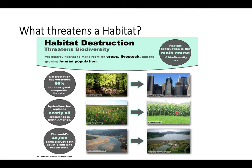Agriculture has replaced nearly all grasslands in North America to make room for crops, and the world's 48,000 dams disrupt both aquatic and land ecosystems. We need reservoirs of fresh water, but that disrupts ecosystems within our planet. We humans are a major threat to our habitat, and we need to be aware of that because destroying our habitat has consequences.